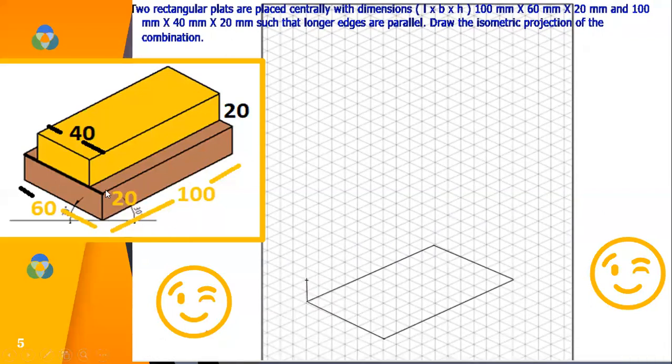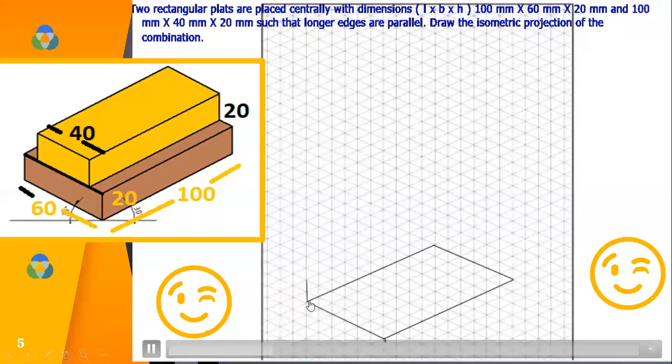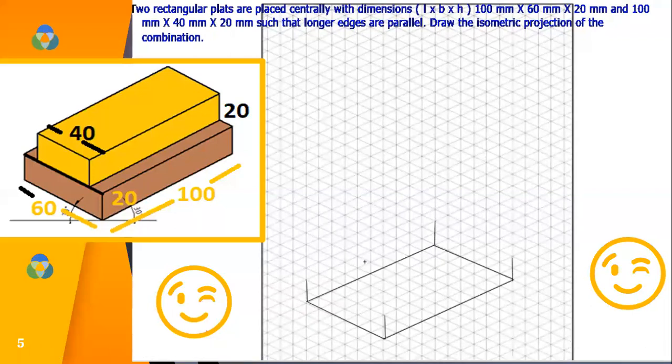Now the thickness of the slab is 20 mm. So from each of the corners go up by 2 boxes, vertically 2 boxes in upward direction. Then join all the top corners.